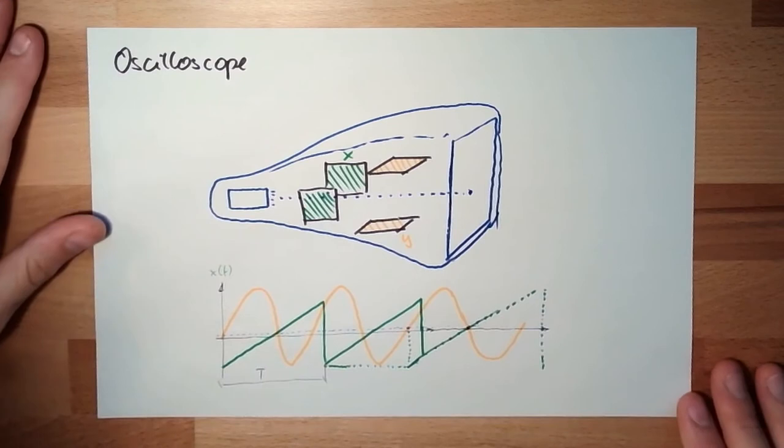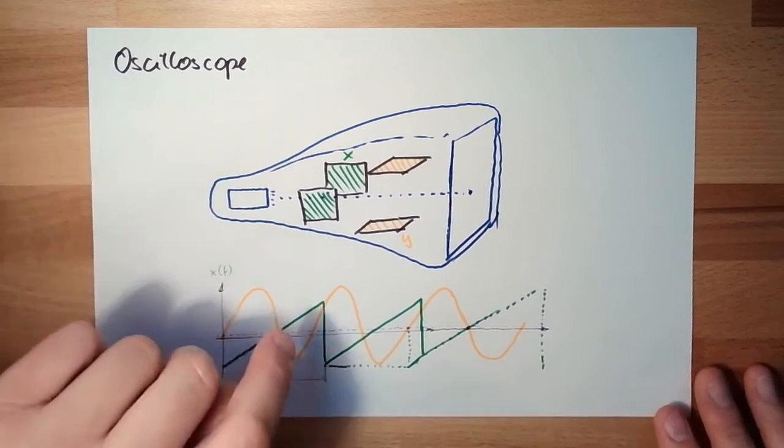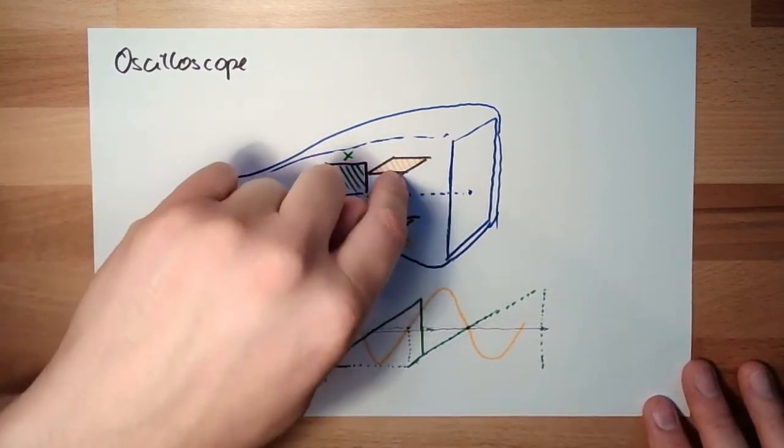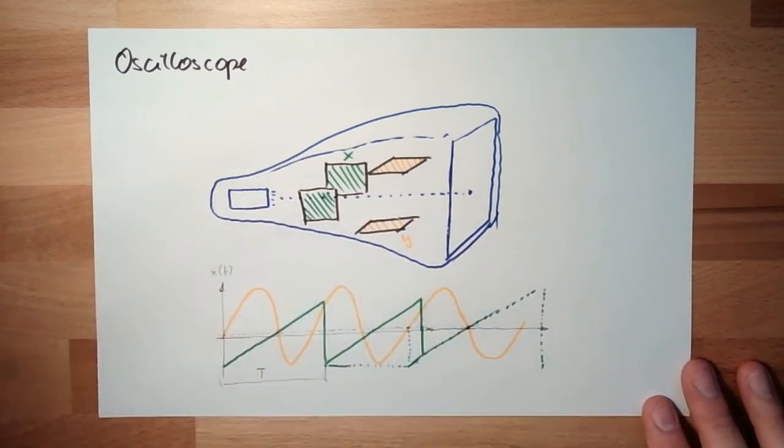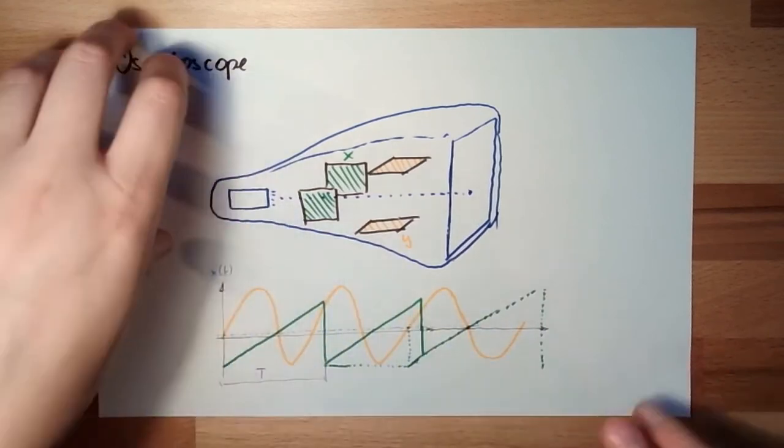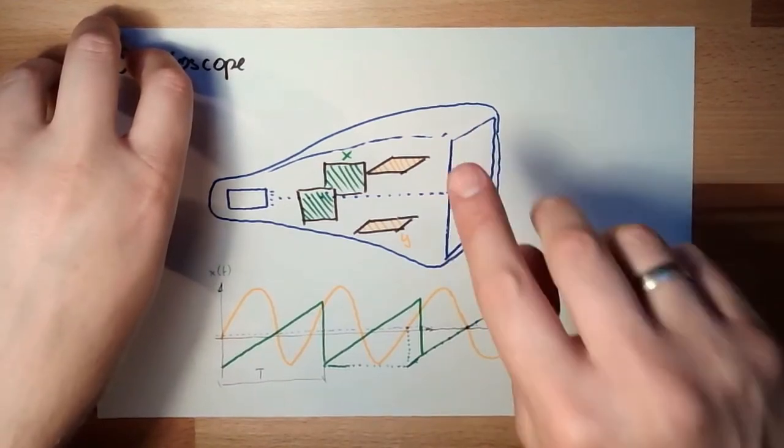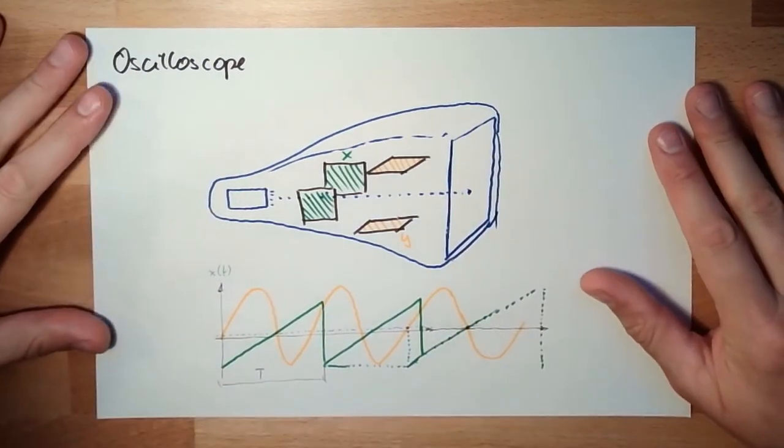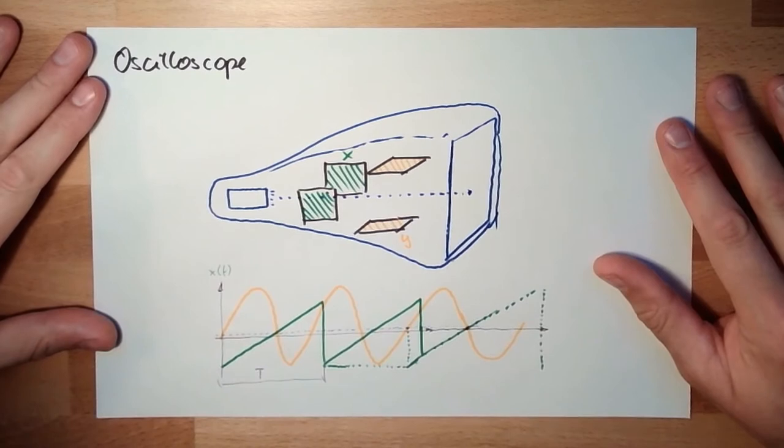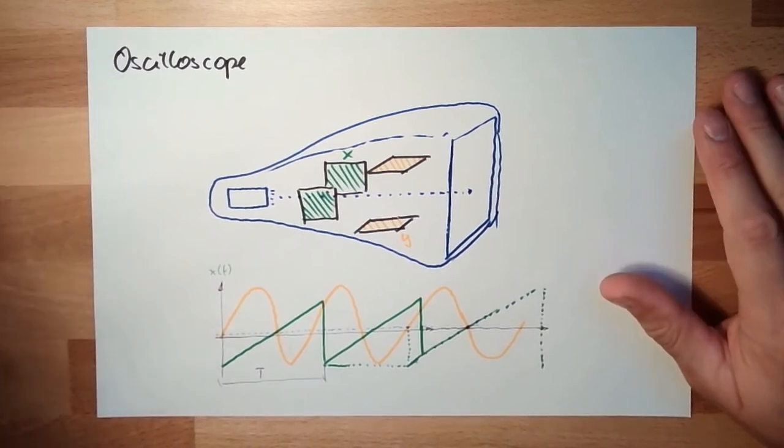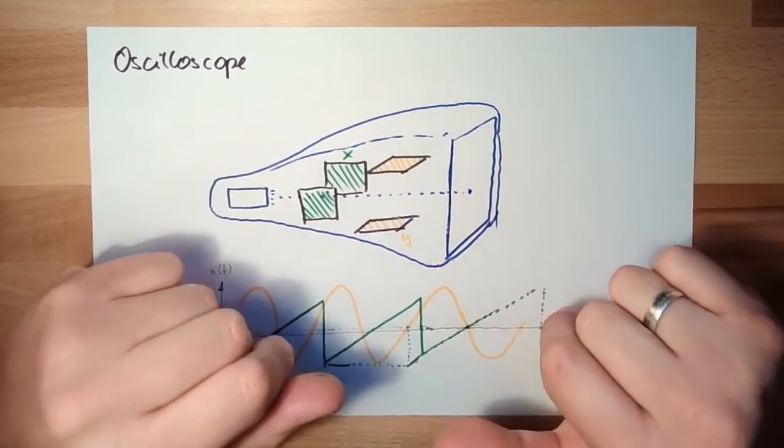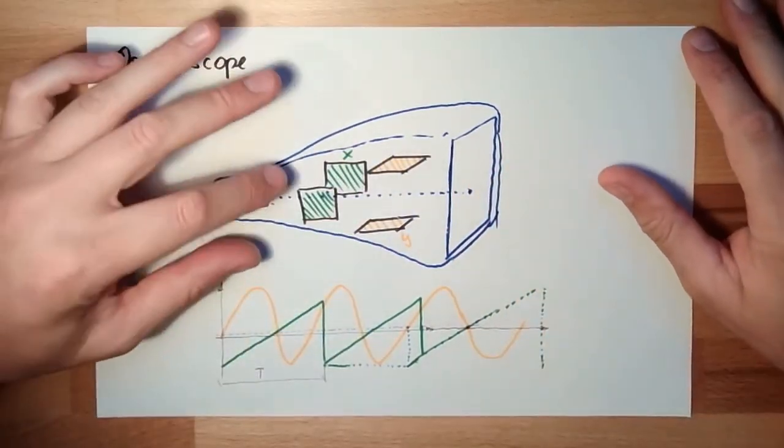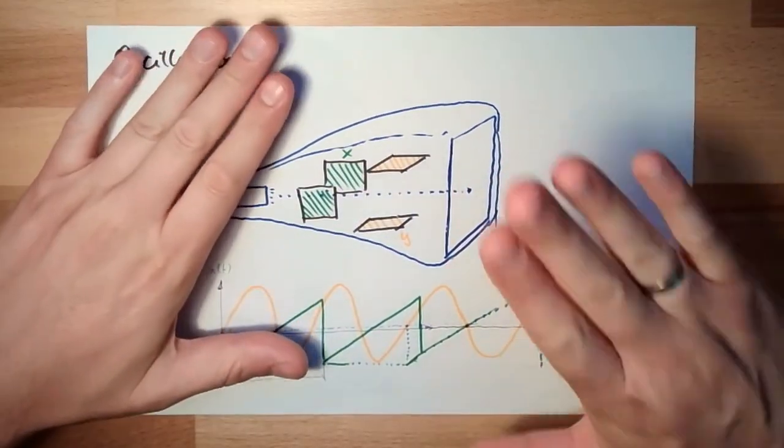I can even attach to X and Y different voltages or different measurements. Then it draws like orbitals here, looks really nice. And you can read something out of it. For example, a swinging measurement. That was sometimes used. So this is an oscilloscope.